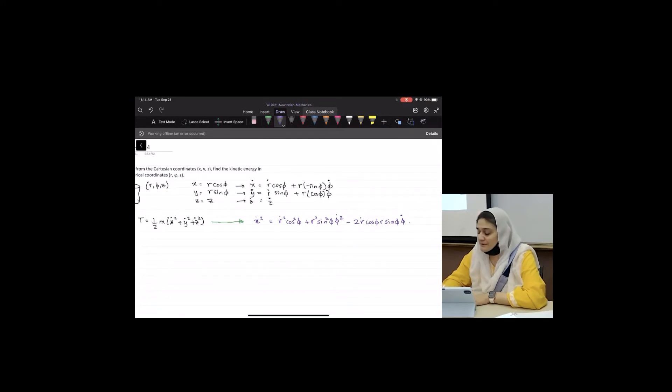So all I did was use the equation A plus B squared equals A squared plus B squared plus 2AB. And if I have a minus sign here, I get a minus sign here.